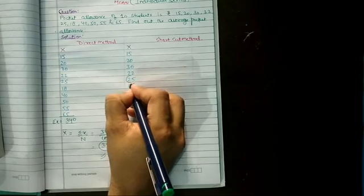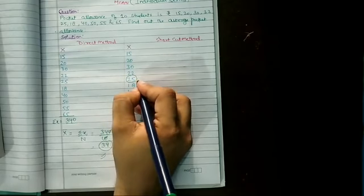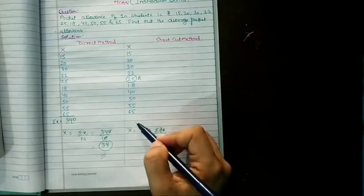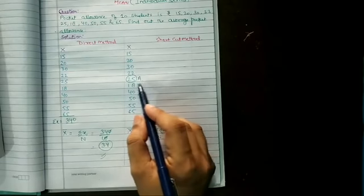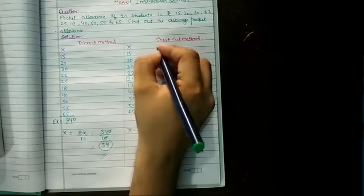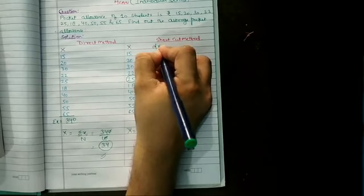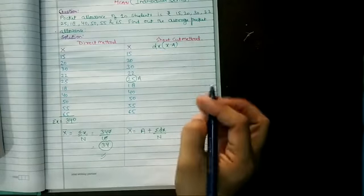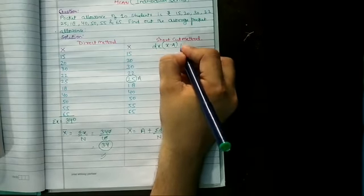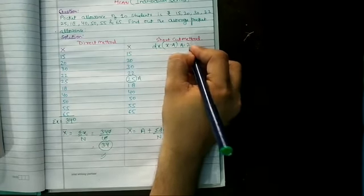As I told you in the previous video, we have to choose an assumed value. We have to choose a value, so let's choose 25. Now we will find out dx. The formula of dx is x minus A.